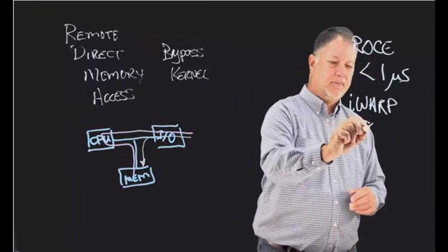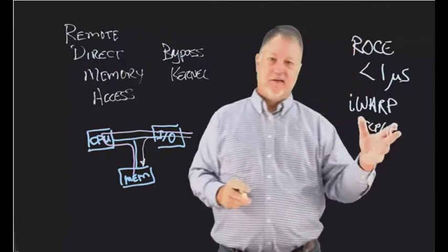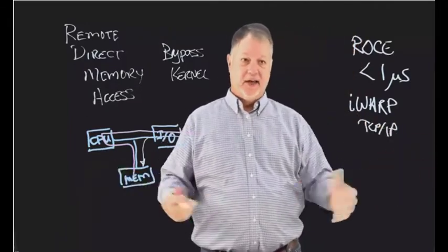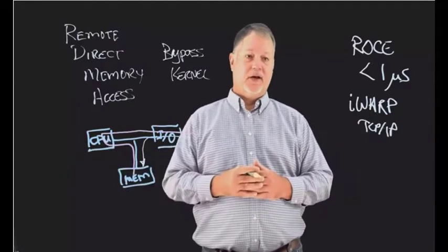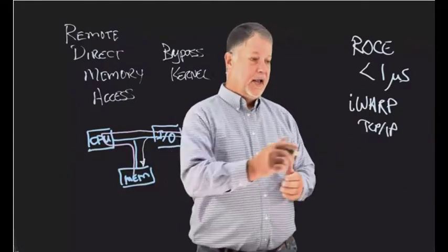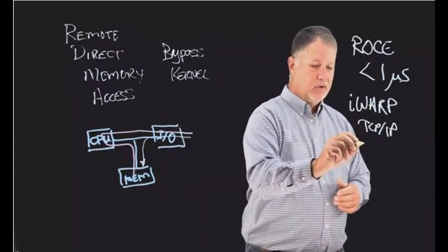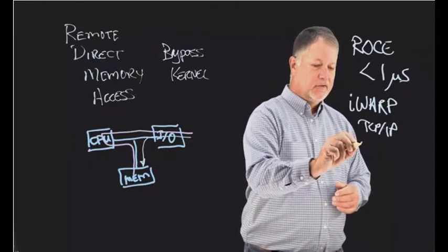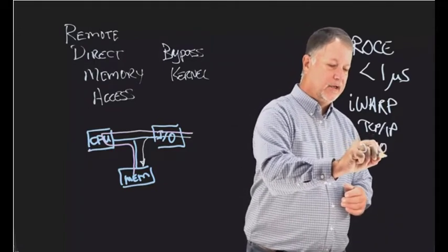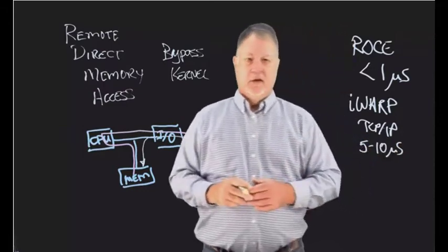What that means is it runs on the network you use today. It can scale the same way your networking scales today, and iWARP will give you a latency profile somewhere in the five to ten microsecond range.